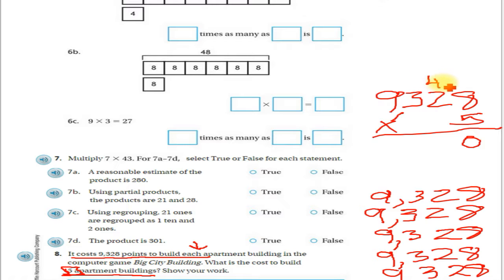Okay, so 5 times 8 - that's 40. 0 goes down, 4 goes into the tens place. 5 times 2 is 10, plus the 4 that I carried into the tens place, that's 14, which is 4 tens and 1 hundred. 5 times 3, that's going to be 15, plus 1, that's 16 hundreds, which is 6 hundreds and 1 thousand. And then 5 times 9, which is 45, plus 1 is 46 thousands.